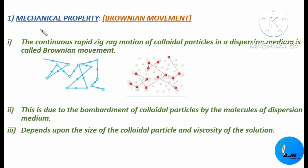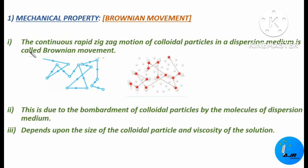The first property is the mechanical property. Under mechanical property, we have the important topic — the Brownian motion. What do you mean by Brownian motion? It is the continuous rapid zigzag motion of colloidal particles in a dispersion medium, and this is called Brownian motion.